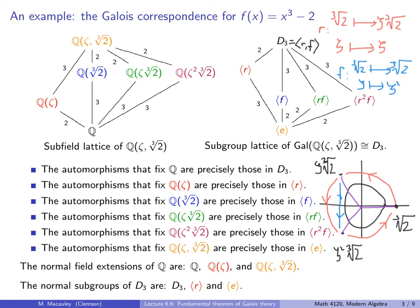Recall that the Fundamental Theorem of Galois Theory said even more: the normal field extensions here were Q adjoined zeta and the entire splitting field. You always have these two extensions being trivially normal, just as you always have the two trivial normal subgroups. But in this case, we have one more normal field extension — and of course the normal subgroups of D3 on the right are also the two that are always normal plus this one additional subgroup.